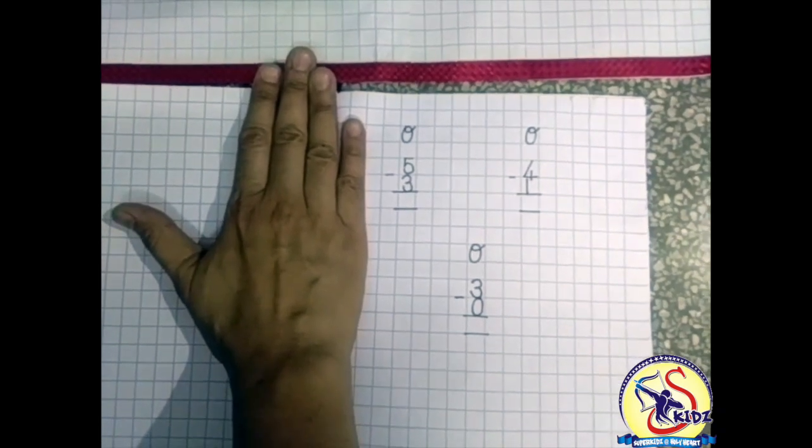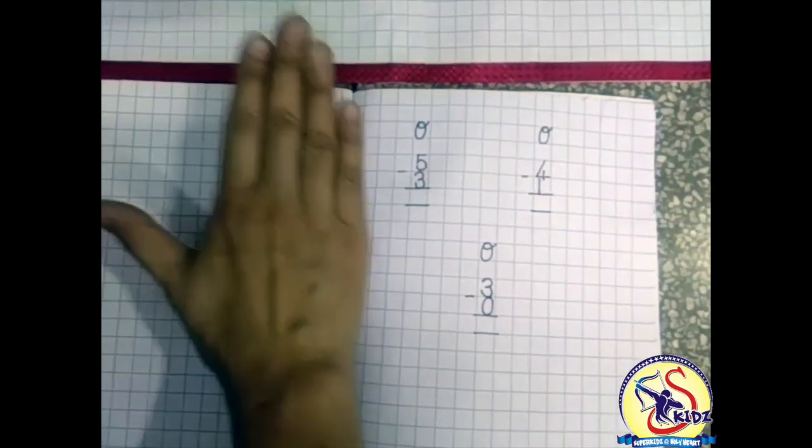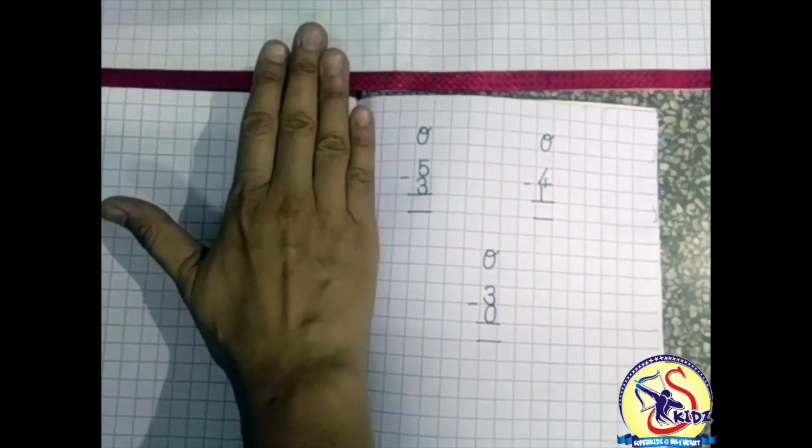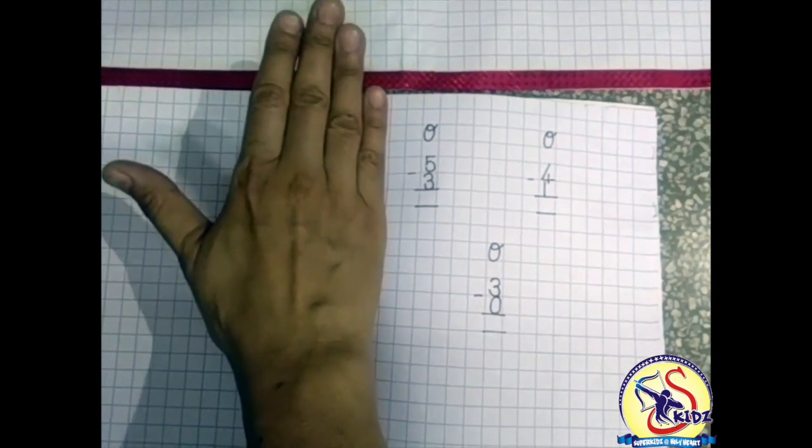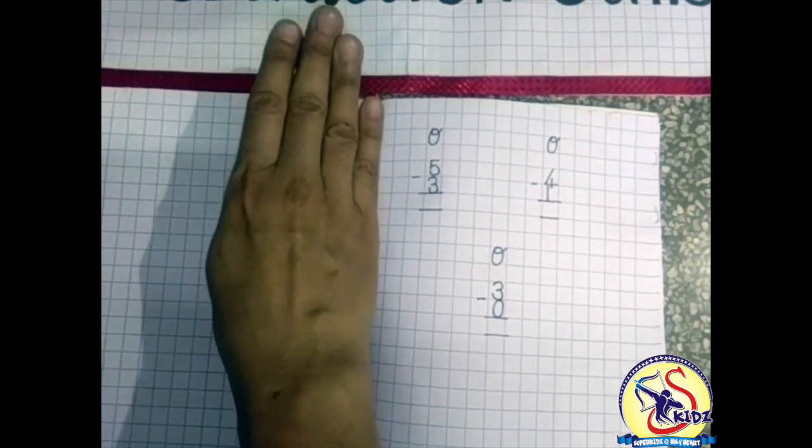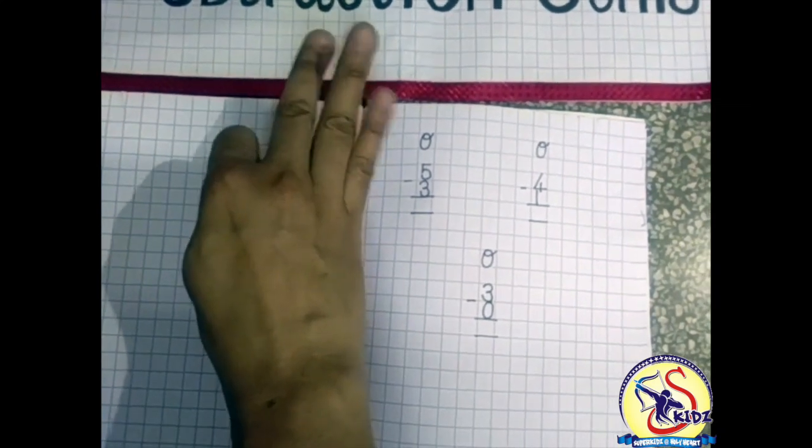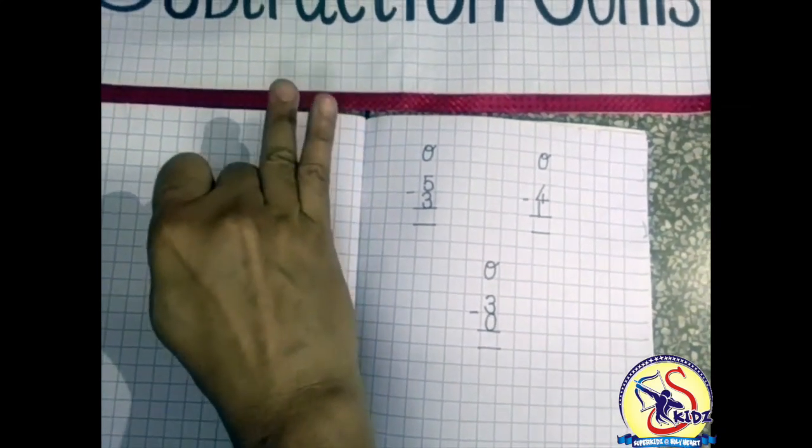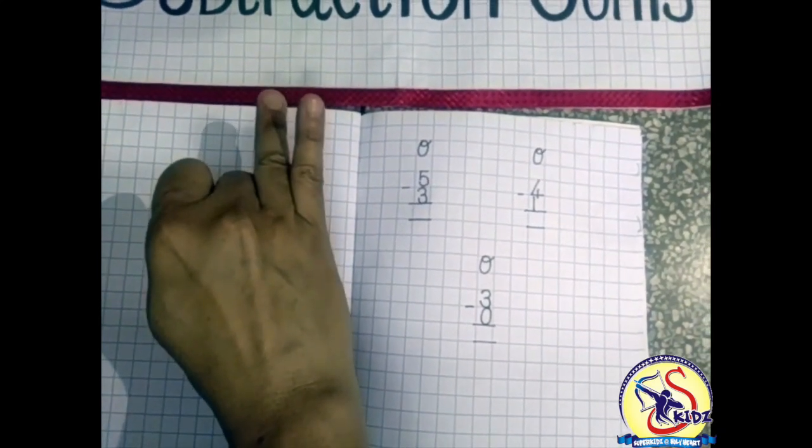Five fingers up, three fingers down. So count three fingers: one, two, three. So how many left? Yes, two. So five minus three is equals to two.